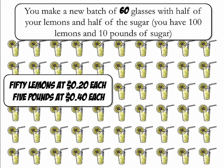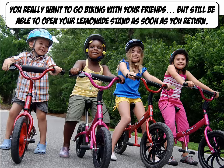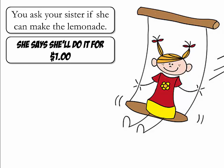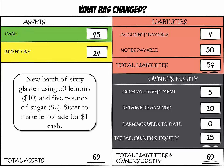You make a new batch of 60 glasses with half of your lemons and half of the sugar. You have a total of 100 lemons and 10 pounds of sugar. You use 50 lemons that cost 20 cents apiece and 5 pounds of sugar that cost 40 cents per pound. You ask your sister to make the lemonade and she'll charge you $1 for labor. What has changed on the balance sheet? You have a new batch of 60 glasses made using 50 lemons and 5 pounds of sugar, and your sister charged $1 for labor.